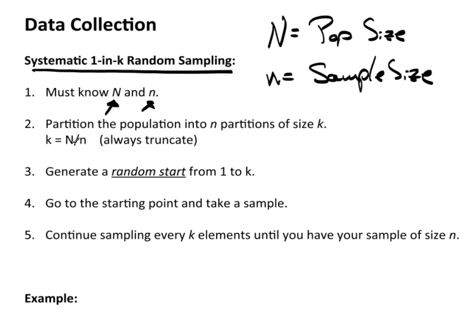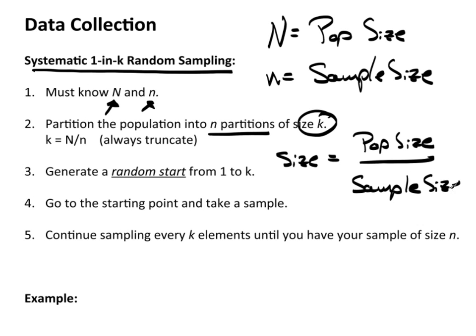Now here's the idea. We're going to partition the population into n partitions. Partitions just a group, each of size k. And we're going to have to actually calculate k. k equals capital N over little n. So these partition sizes, these group sizes, equals the population size divided by the sample size. Now what I'm going to do is walk through the process here and kind of explain it, and then I'm going to whip through an example with some numbers so you can follow me.